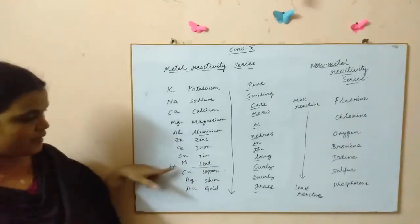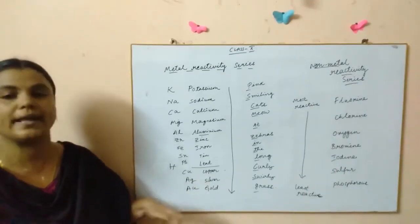Then we have hydrogen here at this level, and then carbon, copper, silver, gold, and platinum.